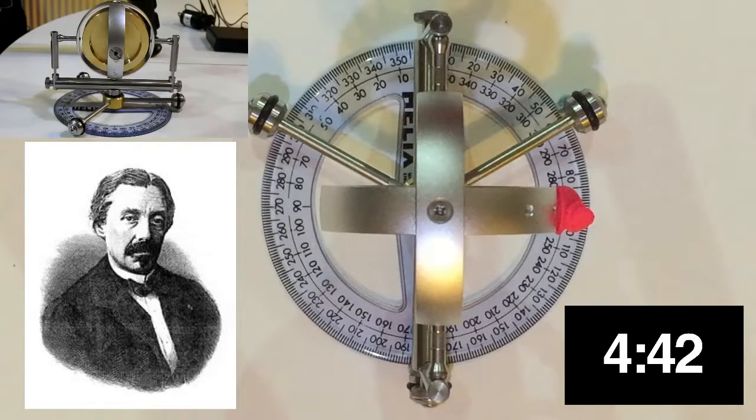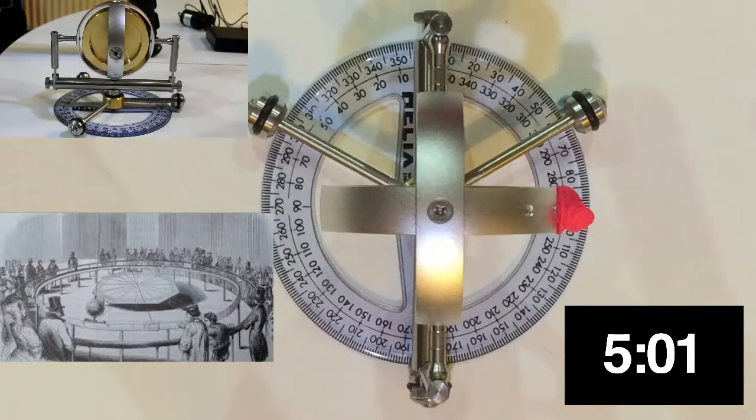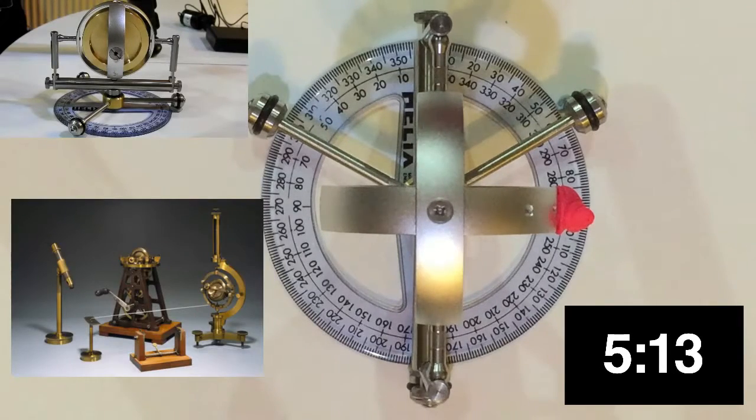In 1851, he provided an experimental demonstration of the rotation of Earth on its axis, and became well known to the public by Foucault's work. Foucault achieved the demonstration by showing the rotation of the plane of oscillation of a long and heavy pendulum suspended from the roof of the Pantheon in Paris. The experiment caused a sensation in both the learned and popular worlds, and Foucault pendulums were suspended in major cities across Europe and America, attracting large crowds. In the following year, he used and named the gyroscope as conceptually simpler experimental proof.